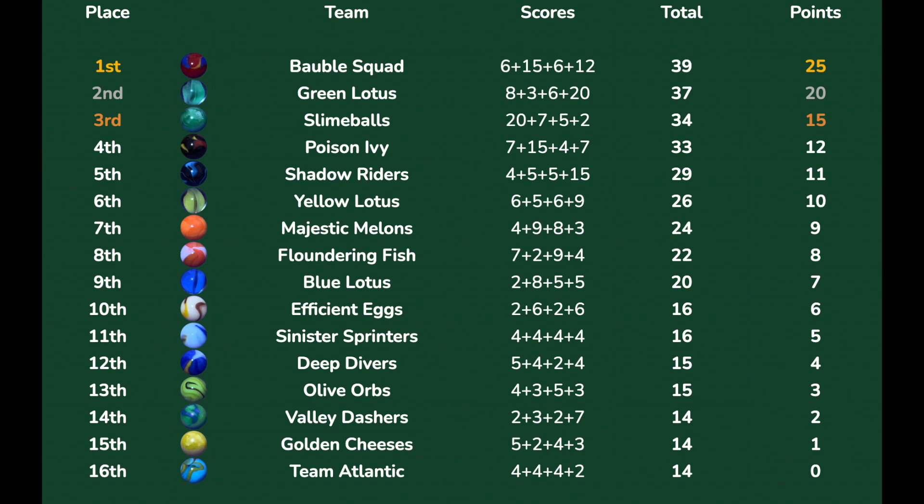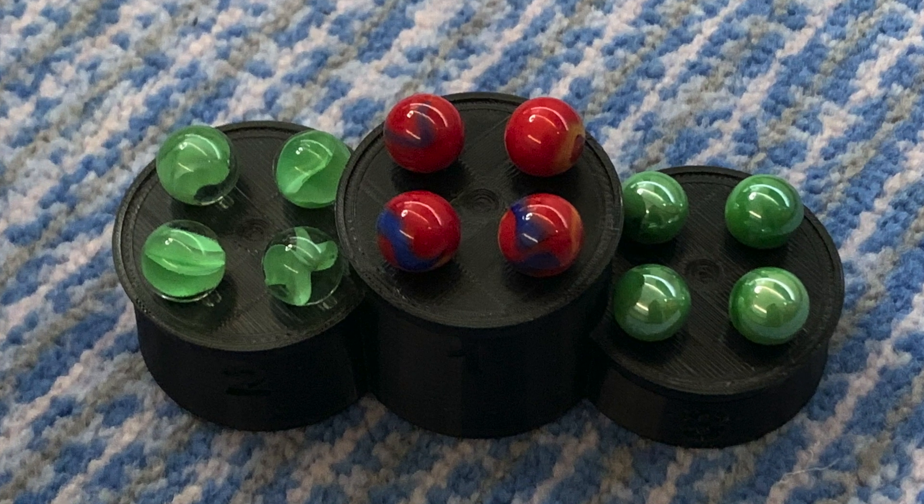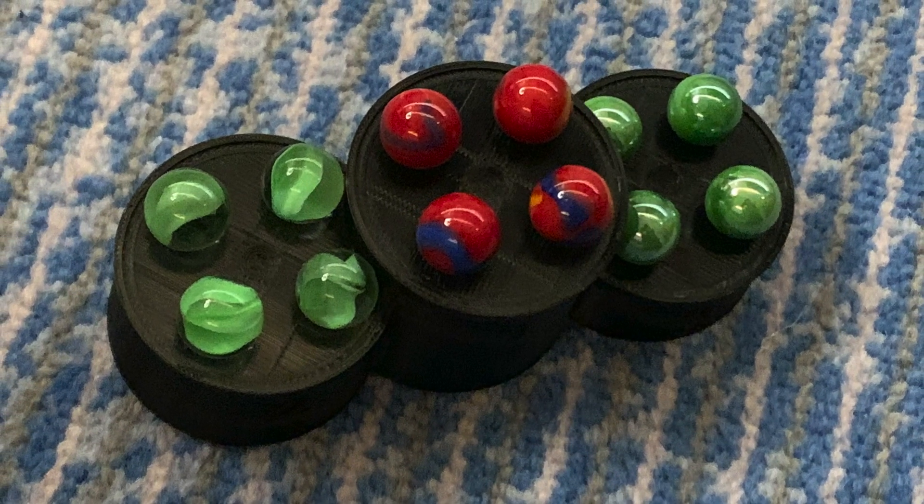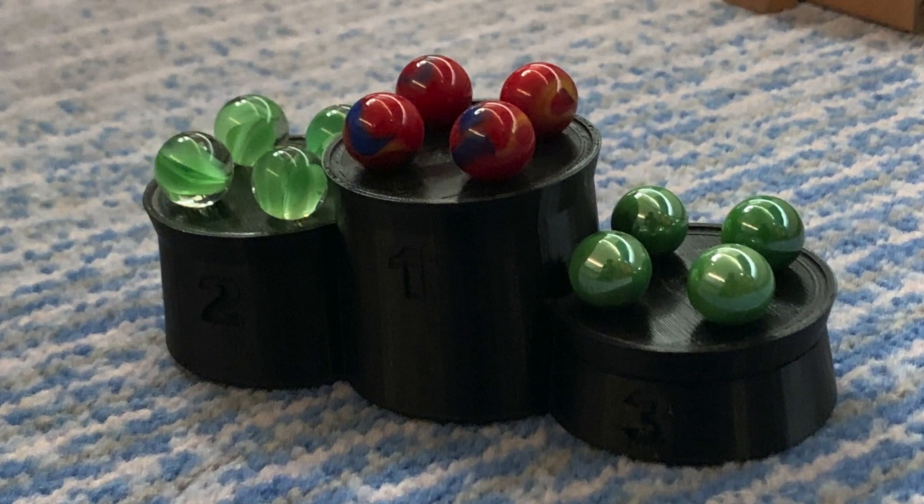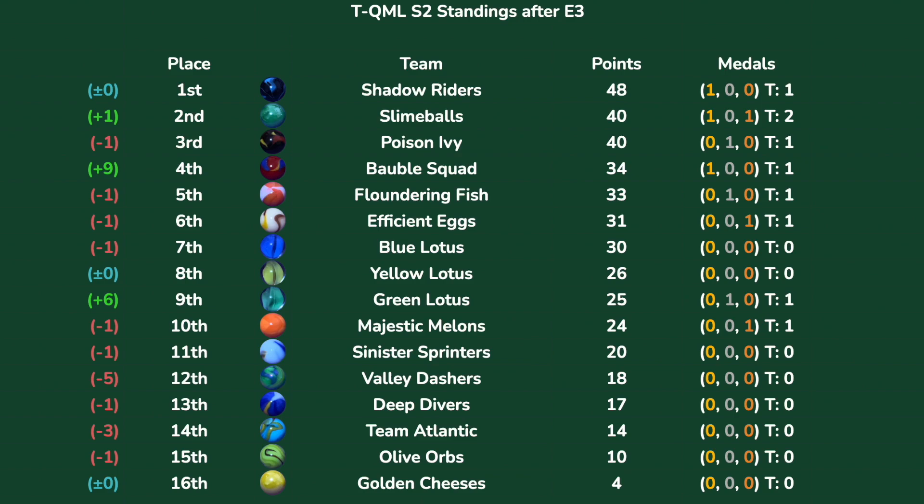Redemption for them after getting 16th in balancing in season one—they stand atop the podium here in season two in balancing. Green Lotus, the first Lotus team to make the podium here in season two. And the Slime Balls, the first team, the home team, to get two medals in this league. But the Bauble Squad are absolutely overjoyed—look at them on the podium. Coming off last place in the first event of season one, they will now shoot up the standings for sure, up nine spots into fourth. Shadow Riders keep first place. Slime Balls go back up into second. Poison Ivy, despite getting fourth, drop to third. That's the Bauble Squad, Floundering Fish, Efficient Eggs, Blue Lotus, and Yellow Lotus. Green Lotus also rising up many positions.